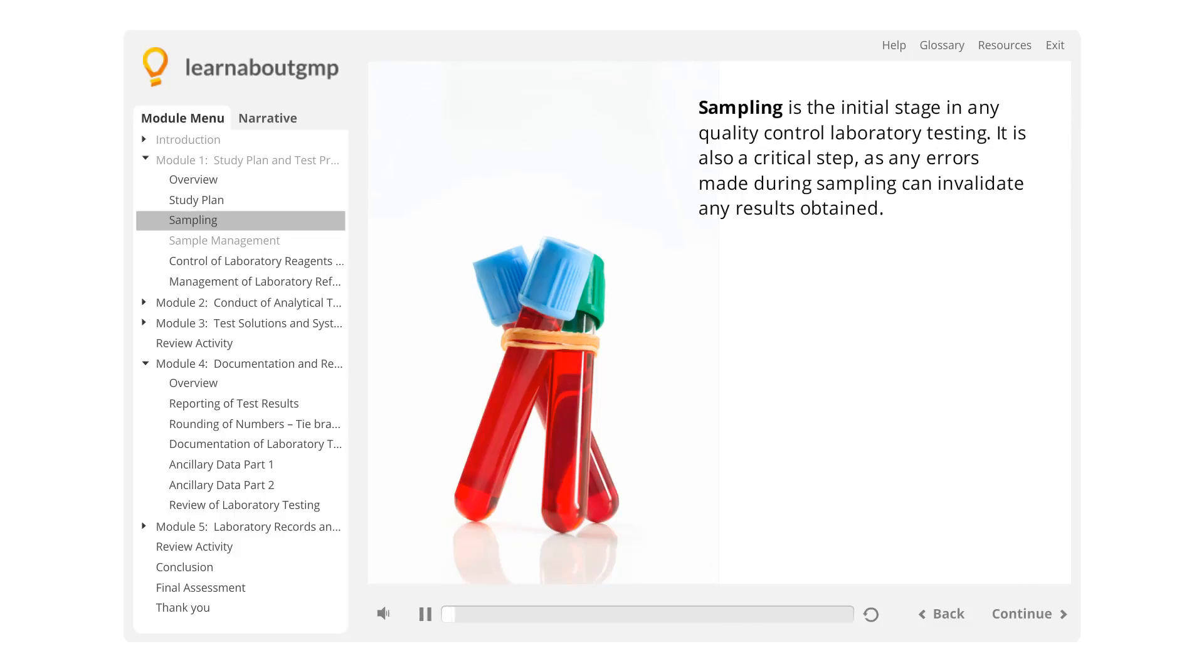Sampling is the initial stage in any quality control laboratory testing. It is also a critical step, as any errors made during sampling can invalidate any results obtained.